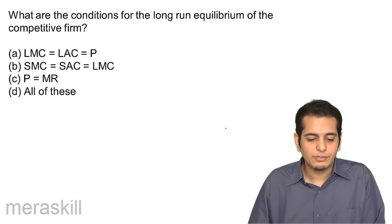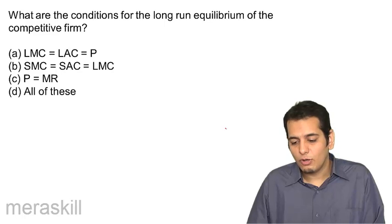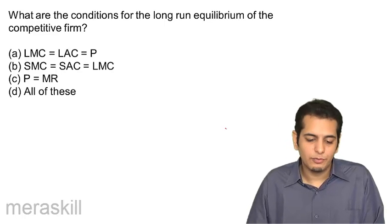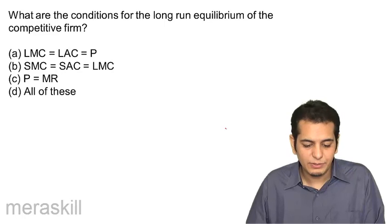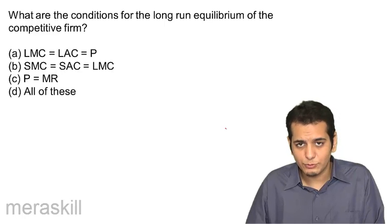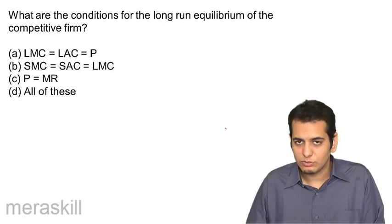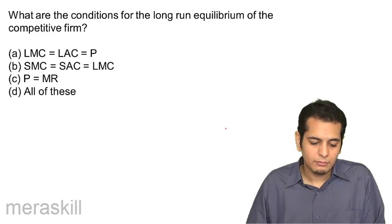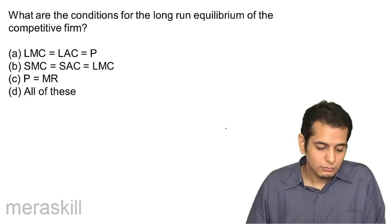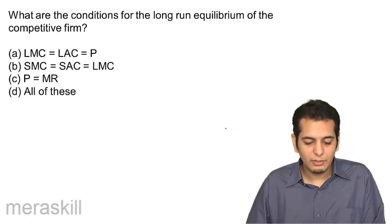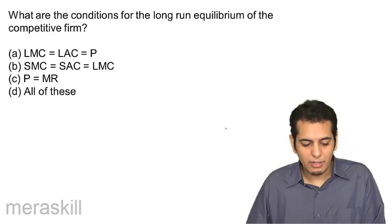Next, what are the conditions for the long-run equilibrium of the competitive firm? A. LMC equals LAC equals P. B. SMC equals SAC equals LMC. C. P equals MR.